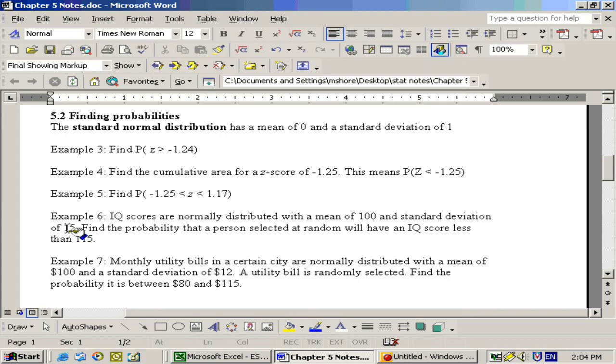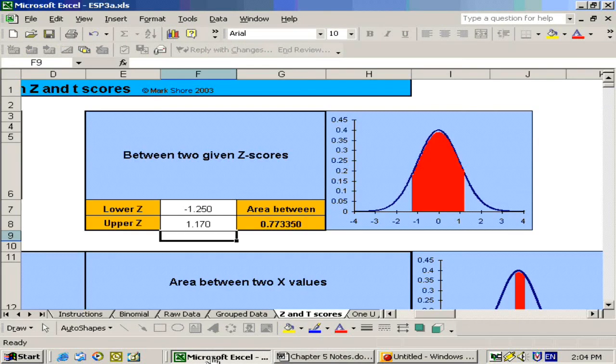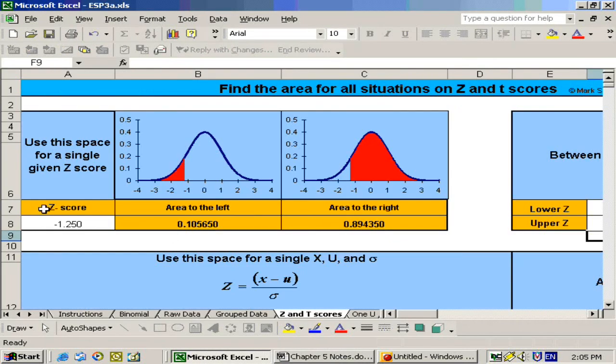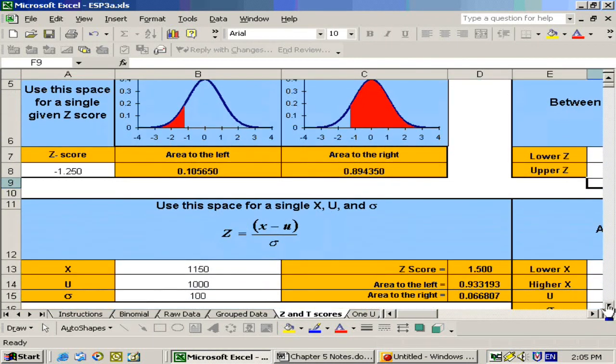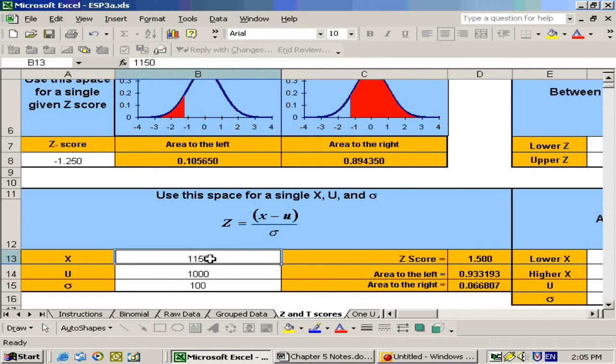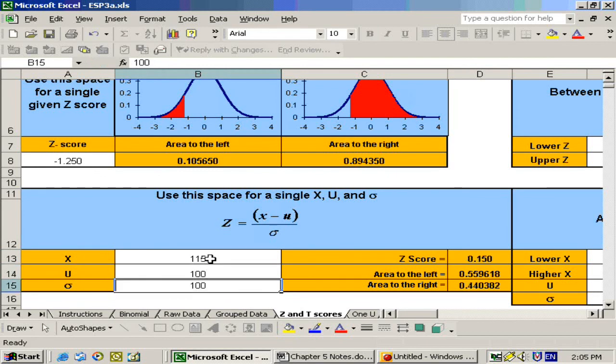Then, once you figure out the z-score, use that area that we were dealing with here. But we can also use the area right here below and put in the raw values that we know, like the person's IQ is 115, the mean is 100, and the standard deviation is 15.